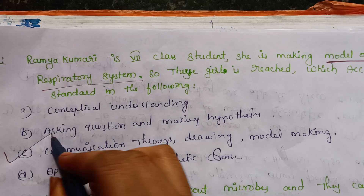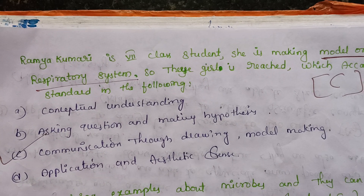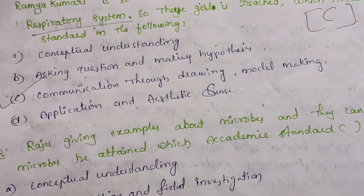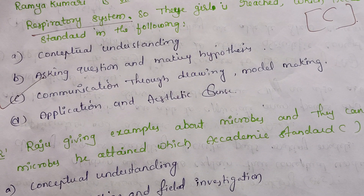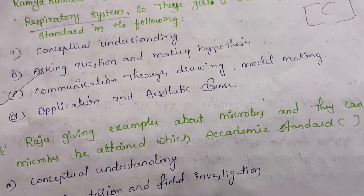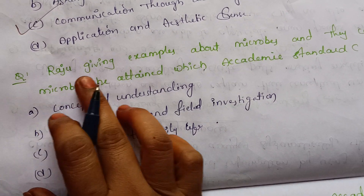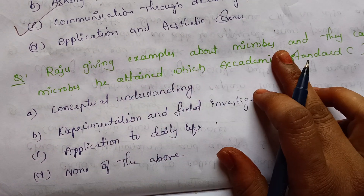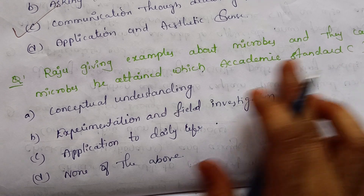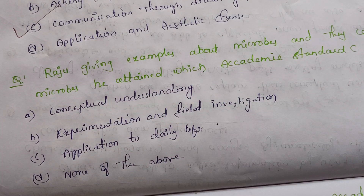The correct option is C — communication through drawing and model making. This is the academic standard that Ramya Kumari has reached. The next question: Raju is giving examples about microbes and is able to differentiate microbes. Which academic standard has he attained?